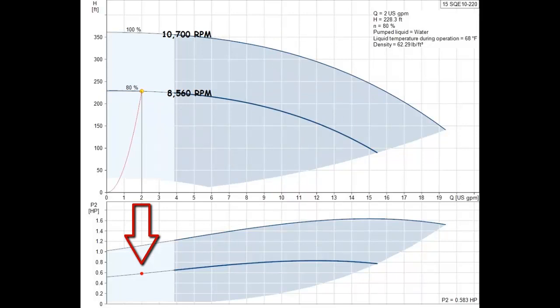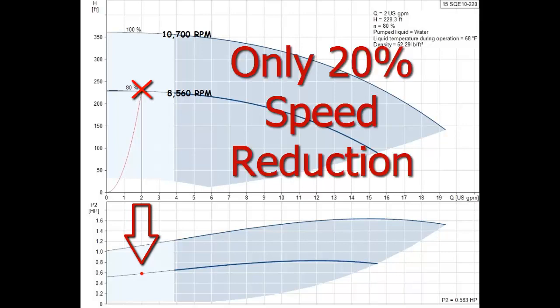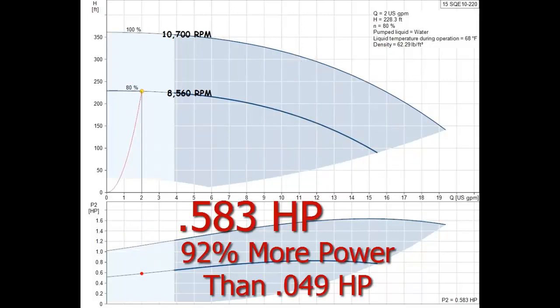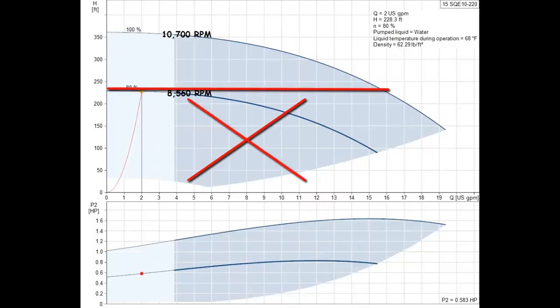As you can see, placing a point at 220 feet of head and 2 gallon per minute flow shows the pump can only be slowed by 20%. This requires 0.583 of a horsepower, which is 92% more energy than the 0.049 horsepower many would like for you to believe. The pump must always maintain 220 feet of head, so none of the shaded area below the red line is usable.